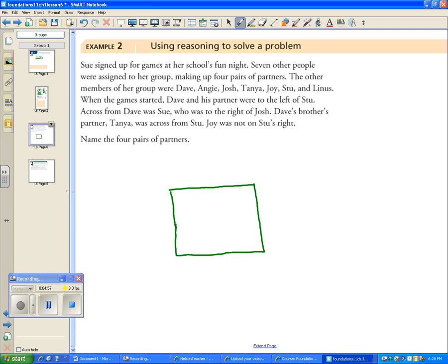The first people they talk about are Dave and Stew, so I'm going to write Dave somewhere. It says Dave and somebody else were to the left of Stew, so Stew needs to be on the right. The left of Stew is Dave, across from Dave is Sue, who was to the right of Josh. So Josh's right has to be Sue, so we'll put him here.